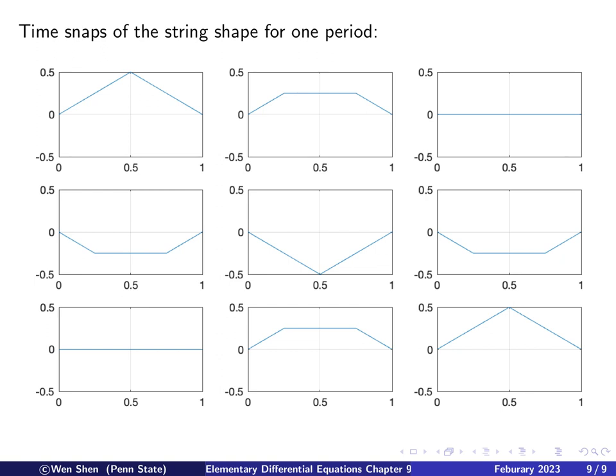That's the end of this video. Later on we will study another way of constructing the solution — the method of characteristics — which results in a different, more geometric form called the D'Alembert solution. But for the discussion of Fourier series, let's end here. I hope you enjoy this one, and I'll see you next time.